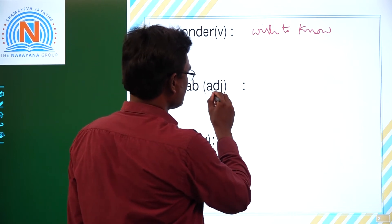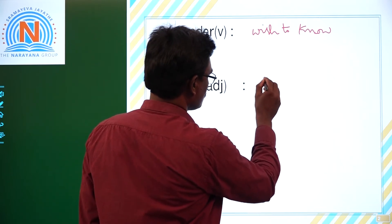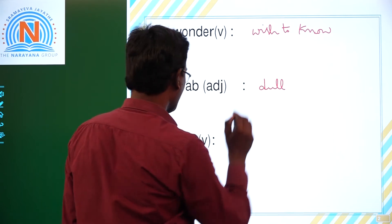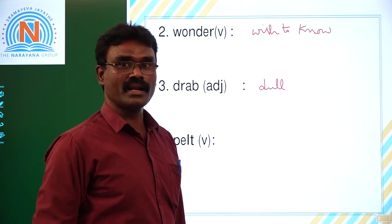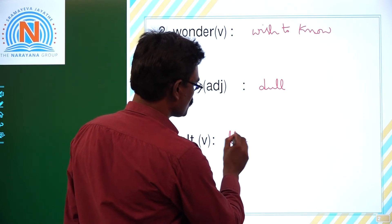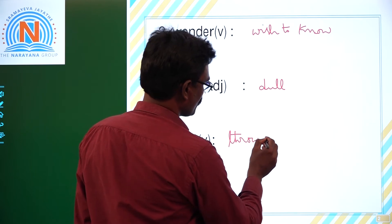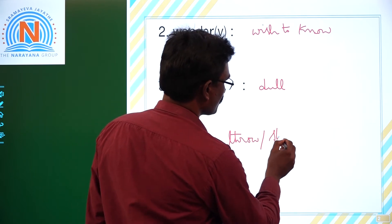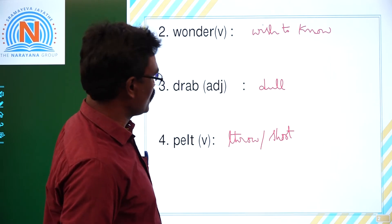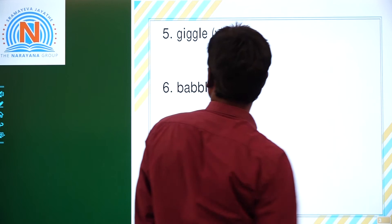Drab, third one. This is also an adjective. Drab meaning dull. Fourth one children. Pelt. Pelt means throw or shoot. Next one children.